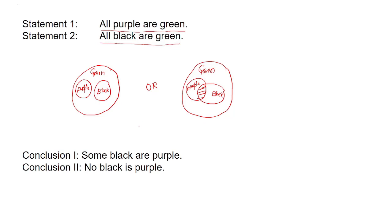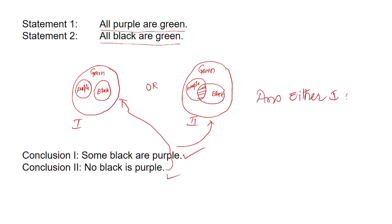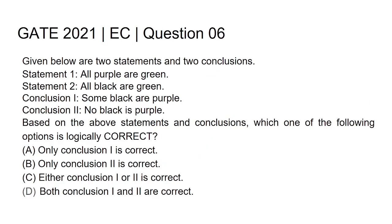Conclusion one — 'some black are purple' — corresponds to the second Venn diagram where purple and black overlap. Conclusion two — 'no black is purple' — corresponds to the first Venn diagram where they are separate. At any one time, either conclusion one is correct or conclusion two is correct, but not both simultaneously. So the answer is option C.